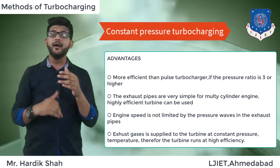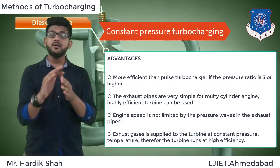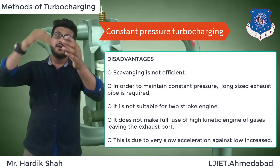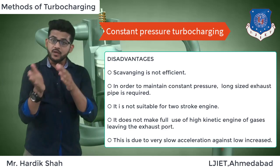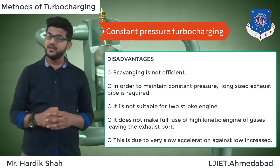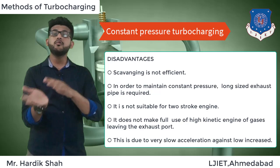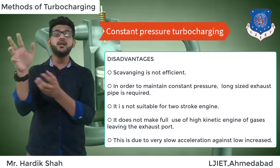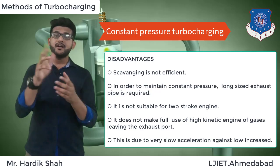Another advantage is that exhaust gases are supplied to the turbine at constant pressure and also at constant temperature, so the turbine can run at high efficiency since pressure ratio and temperature are known. The disadvantages are: scavenging is not very efficient; long exhaust pipes are required to maintain constant pressure; it is not suitable for two-stroke engines; it does not make full use of high kinetic energy in the exhaust gases; and it has very slow acceleration at low increments.